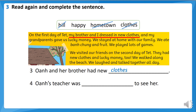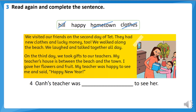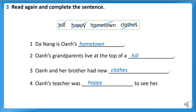Clothes. Good. And the last one, number four: Oanh's teacher was... Look at this — 'My teacher was happy to see me.' So the answer for number four is: happy. Okay kids, let's have a look at these answers one more time.